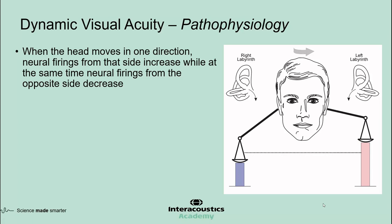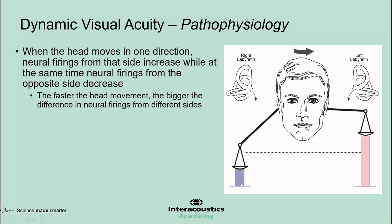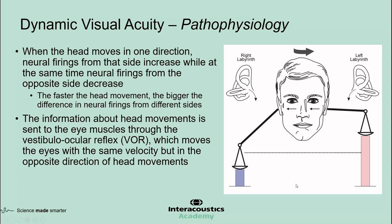When the head moves to one direction, neural activities from that side increase, and at the same time, neural activities from the opposite side decrease. The faster the head moves, the bigger the difference in neural firings from different sides becomes. The information about head movements is sent to the eye muscles via the vestibular and oculomotor nuclei. This information is used by the VOR to move the eyes with the same velocity as the head, but in the opposite direction.